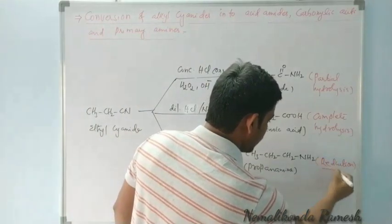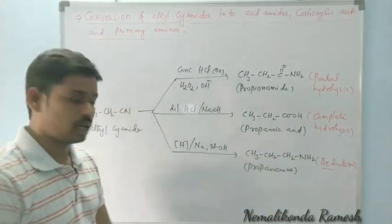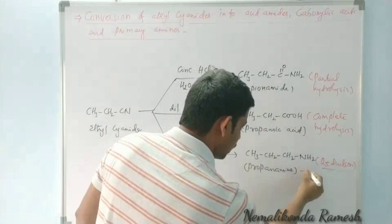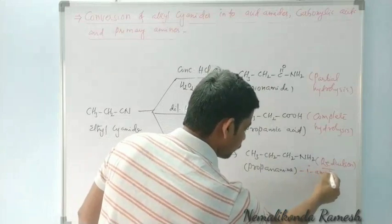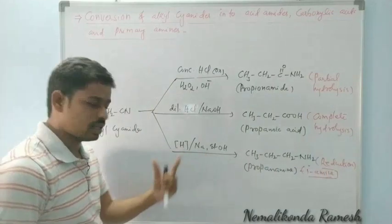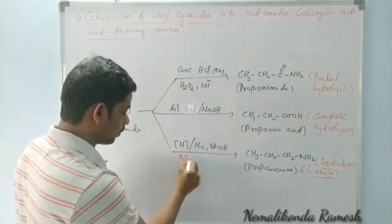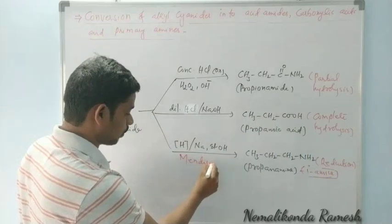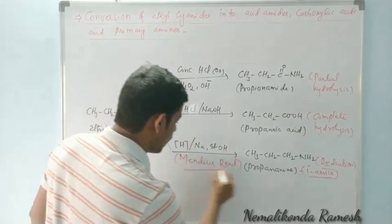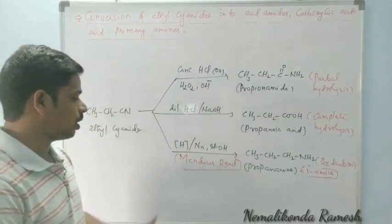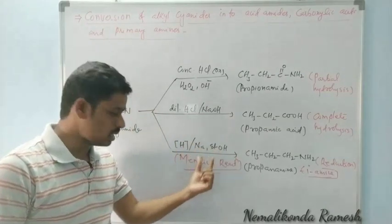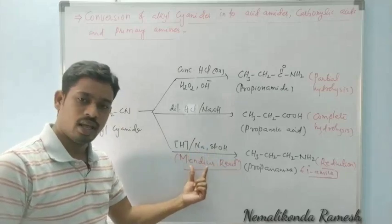On reduction, we get primary amines. The name of this reduction reaction is Mendius reaction. Reduction of cyanides in the presence of sodium and alcohol is called Mendius reaction, and in this reaction primary amines are formed.